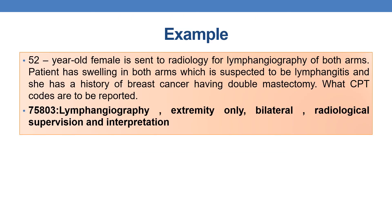Let us discuss an example. A 52-year-old female is sent to radiology for lymphangiography of both arms. The patient has swelling in both arms suspected to be lymphangitis and has a history of breast cancer with double mastectomy. Since lymphangiography is of both arms — that is, bilateral — the appropriate code is CPT 75803: lymphangiography, extremity only, bilateral, radiological supervision and interpretation.